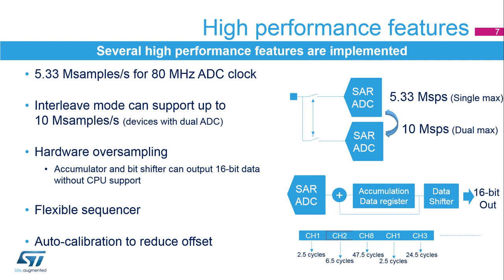The ADC includes oversampling hardware which accumulates data and then divides without CPU help. The oversampler can accommodate from 2 to 256 times samples and right-shift from 1 to 8 binary digits. The sequencer allows the user to convert up to 16 channels in any desired order, and each channel can have a different sampling period.